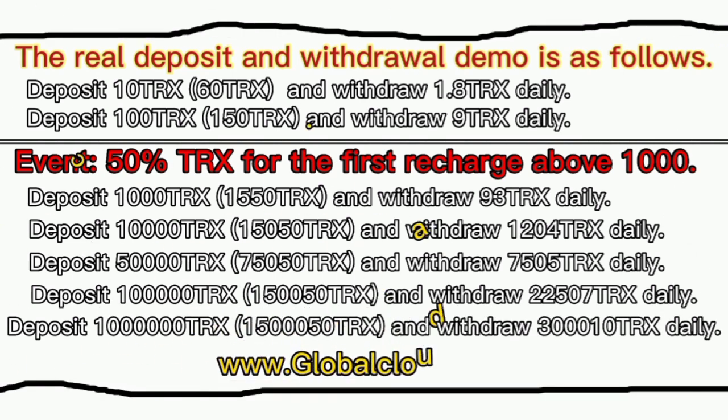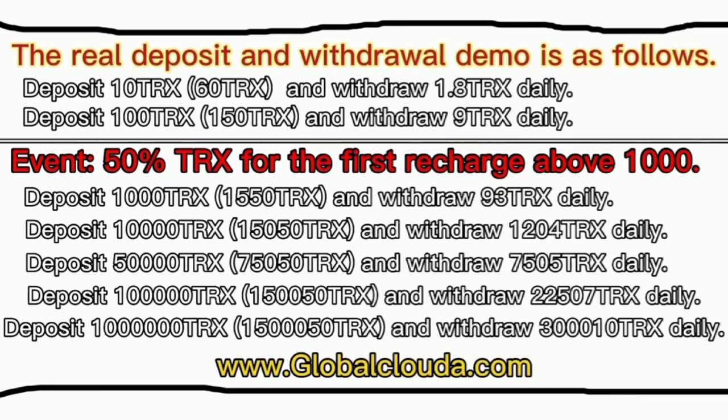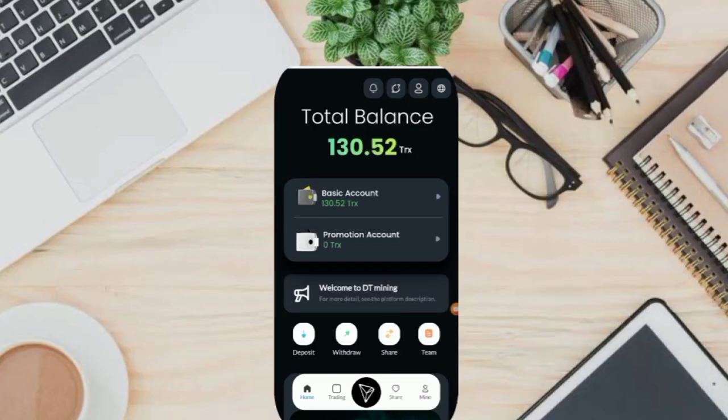Deposit 10,000 TRX, get 15,050 TRX, and withdraw 1,204 TRX daily. Deposit 50,000 TRX, get 75,050 TRX, and withdraw 7,505 TRX daily. Deposit 100,000 TRX, get 150,050 TRX, and withdraw 22,507 TRX daily. Deposit 1,000,000 TRX, get 1,500,050 TRX, and withdraw 3,010 TRX daily. If you promote the Global Cloud platform, it gives rich rewards for recommendations on different levels.